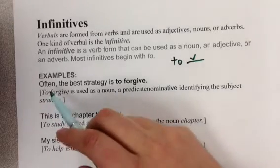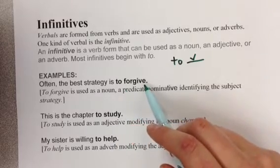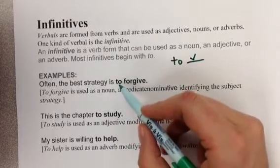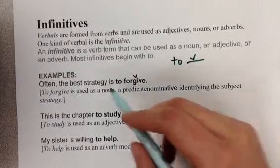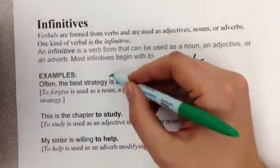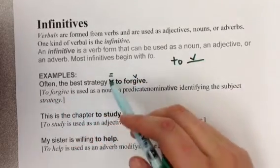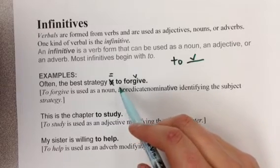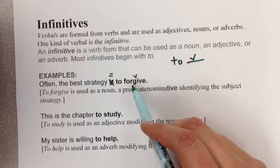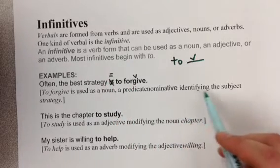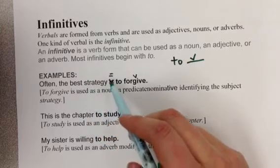Here are some examples. Often the best strategy is to forgive. Here we have to verb, that's an infinitive. Is is a linking verb, and we know that because we can replace it with an equal sign. So often the best strategy equals to forgive. In this case, to forgive is used as what's called a predicate nominative, which is a noun after a linking verb. And it identifies, it gives a name to this strategy. The name for this strategy equals to forgive.